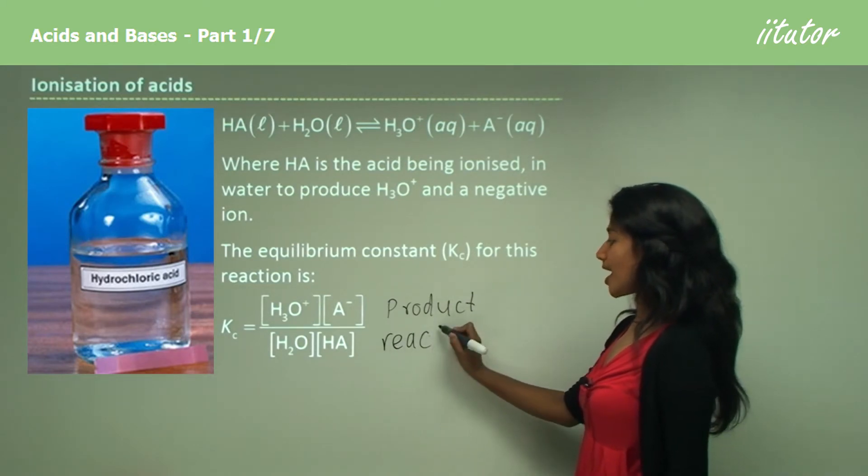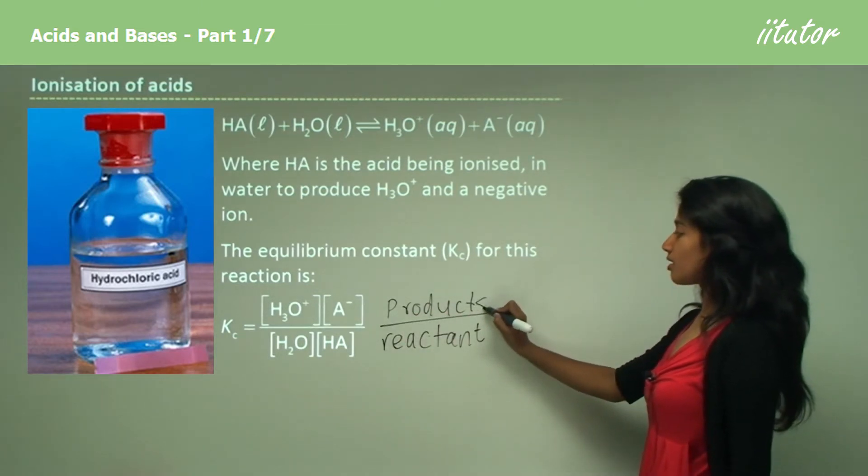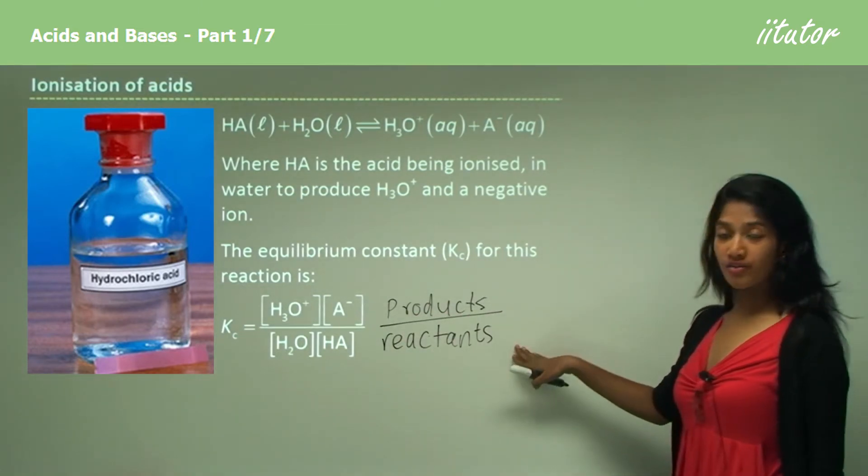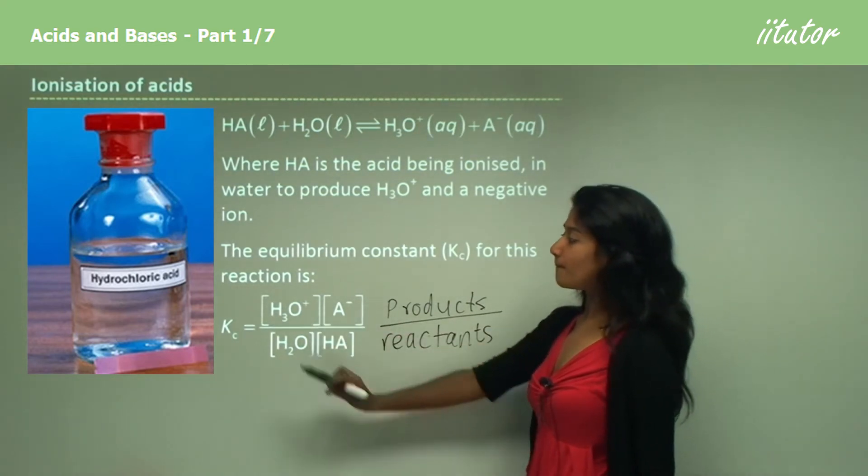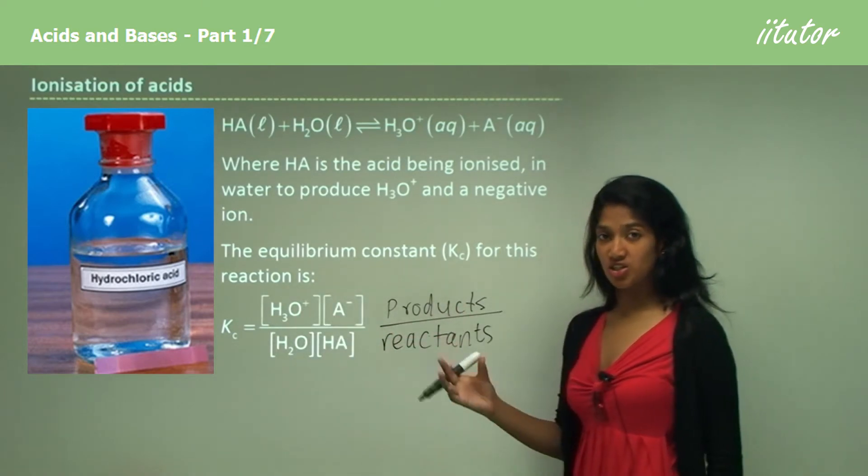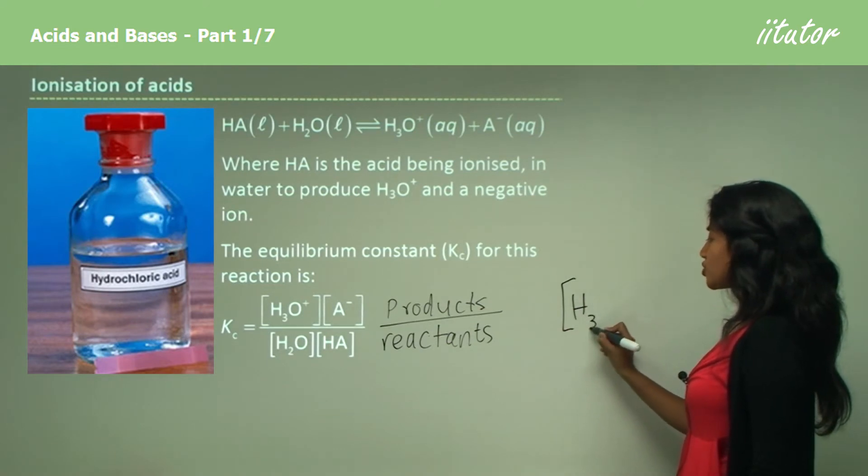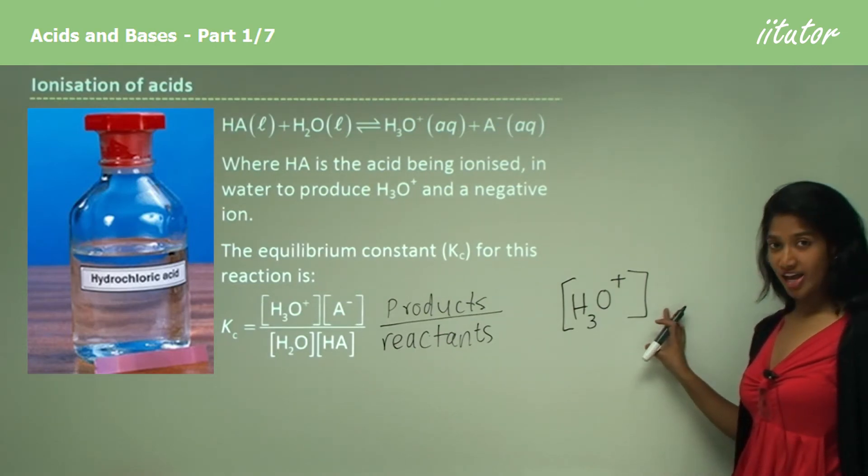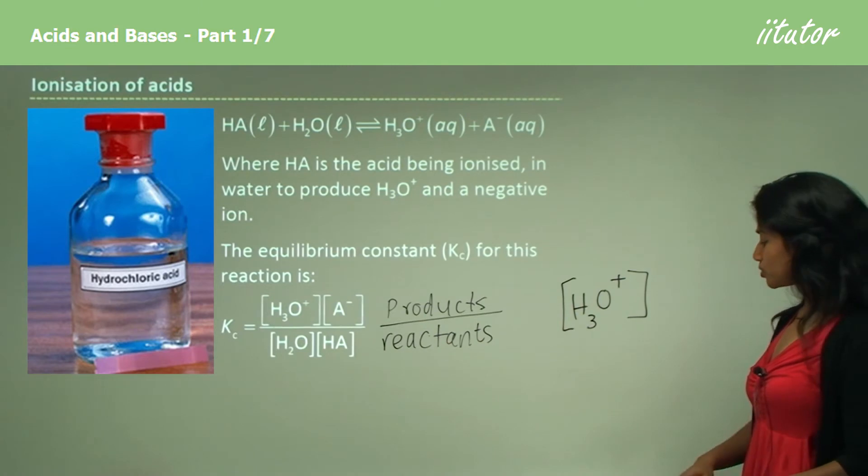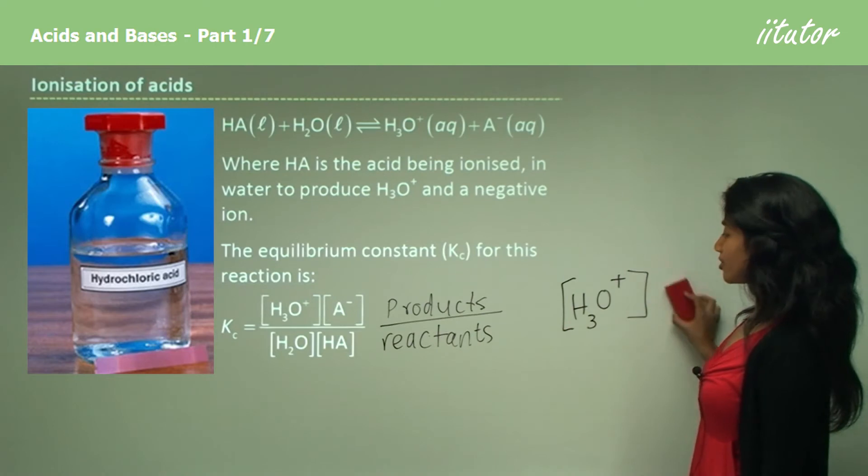Products over reactants gives a K value. You probably haven't seen these before, but these square brackets mean concentration. For example, the hydronium ion concentration can be denoted using this symbol, and this will come recurrently in our HSC topic. You'll be able to work out the concentration and read it this way.